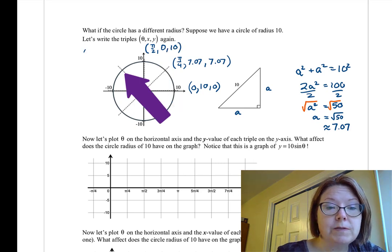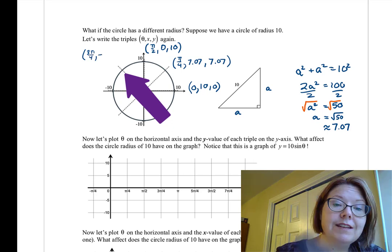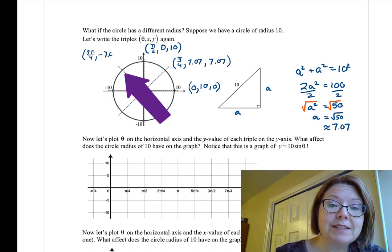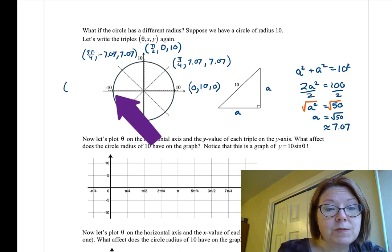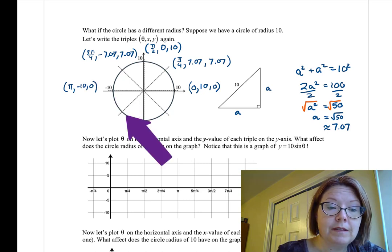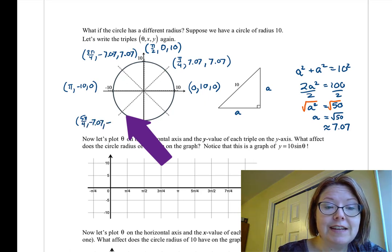The next triple is at 3π over 4, negative 7.07 for x, and positive 7.07 for y. The next one's at π, and it's negative 10 for x and 0 for y. Then 5π over 4, negative 7.07 for x, and negative 7.07 for y.